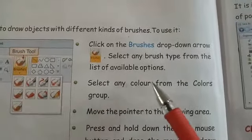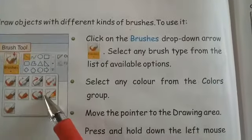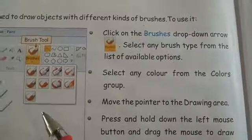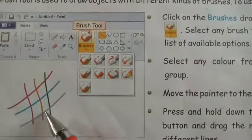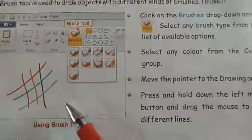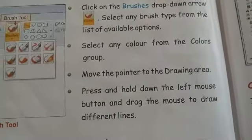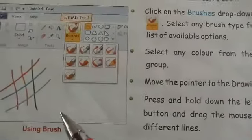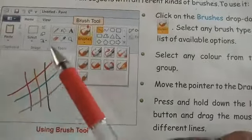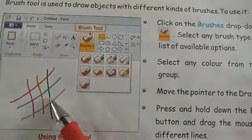Next, select any color from the color group. After selecting the brush, you have to choose a color from the color group. Then move the pointer to the drawing area. After choosing your color, move your mouse pointer to the drawing area. Many lines can be drawn there, as demonstrated.